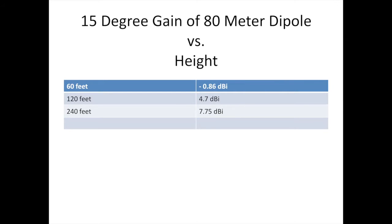Looking at the gain of an 80 meter dipole versus height: At 60 feet, your gain is negative 0.8 dBi. At 120 feet, 4.7 dBi. And at 240 feet, you get 7.75 dBi gain.